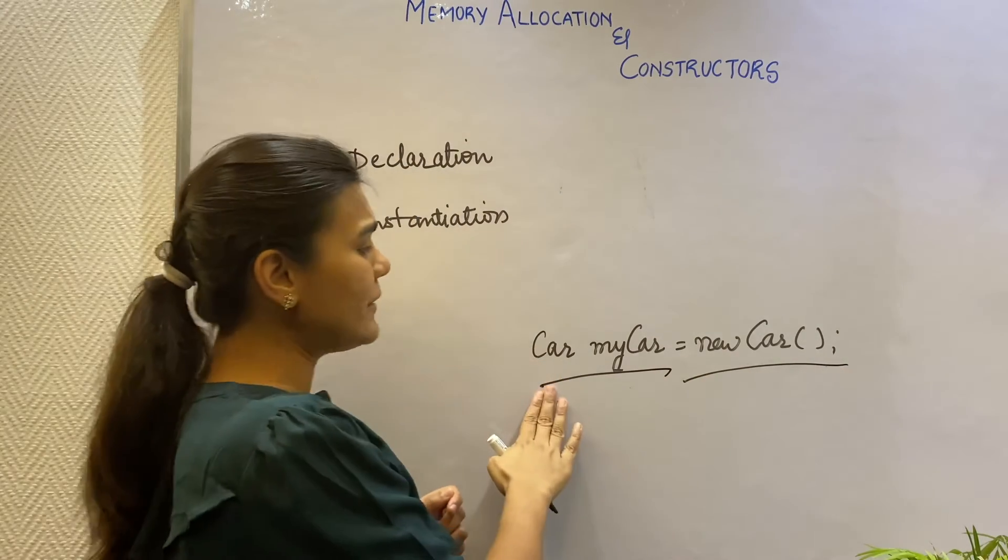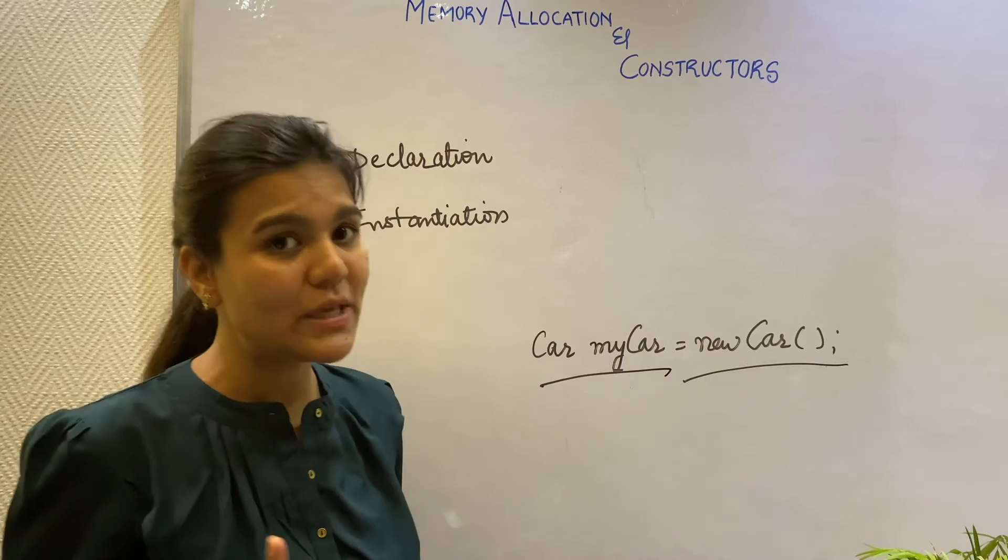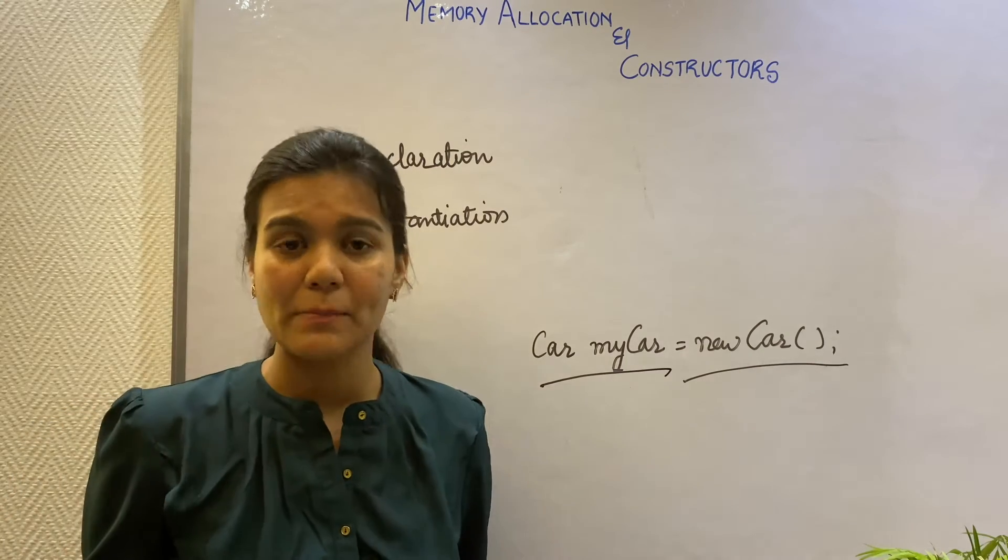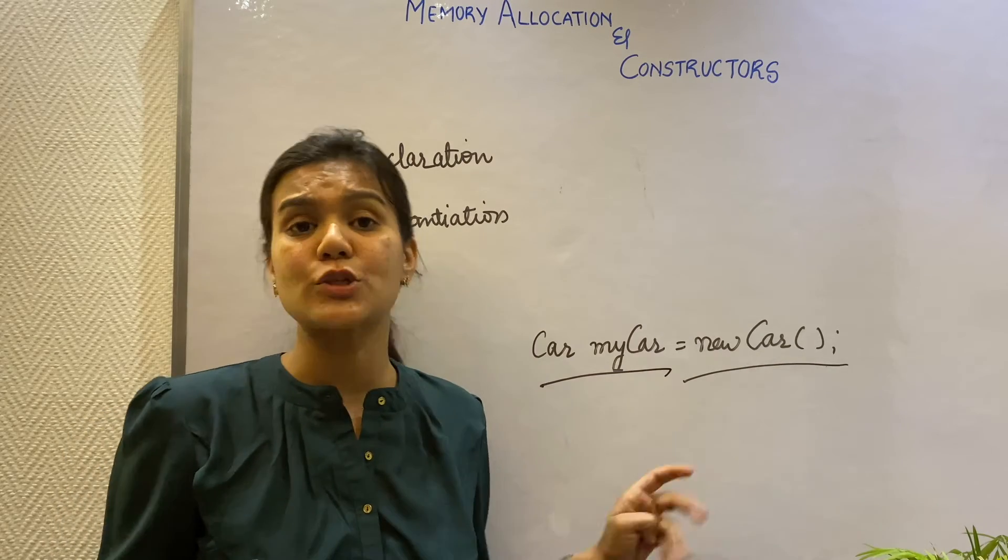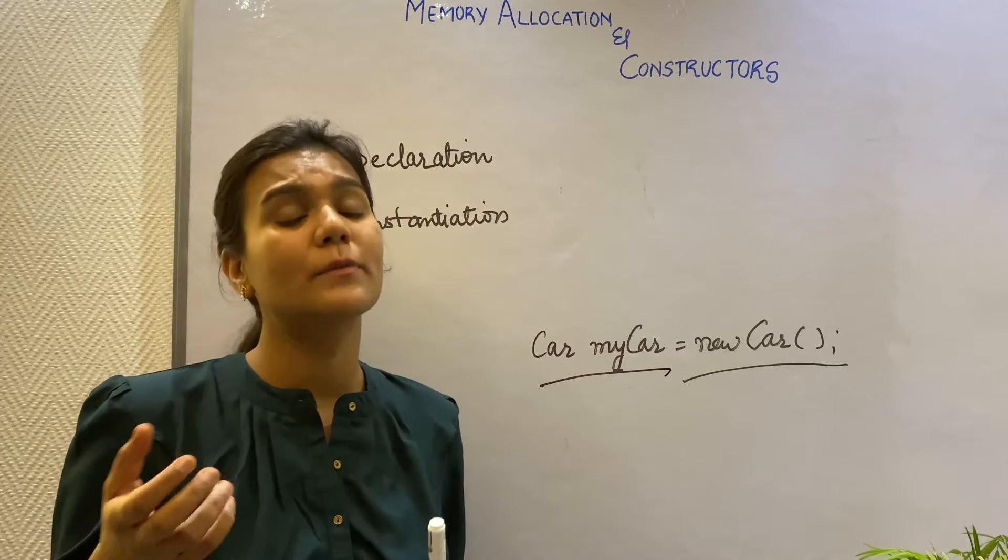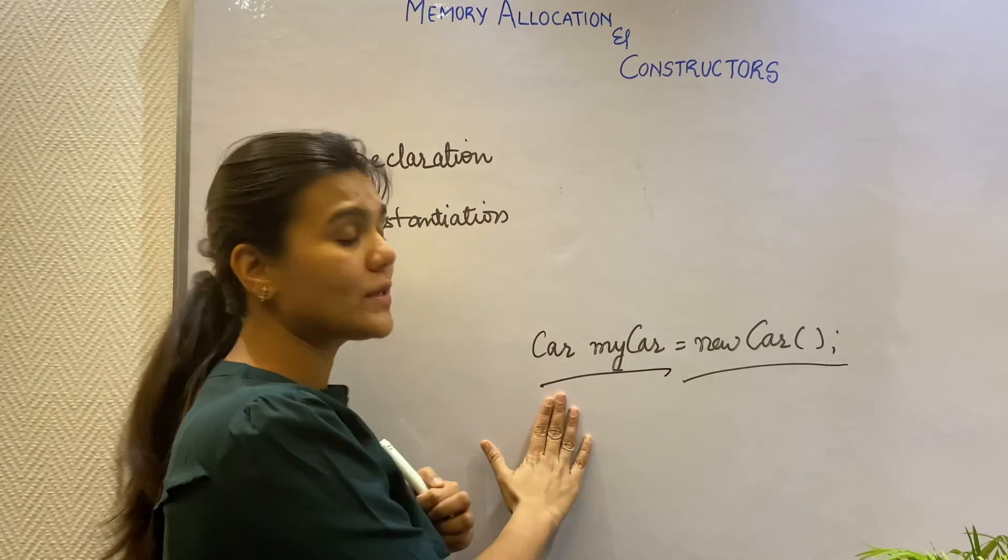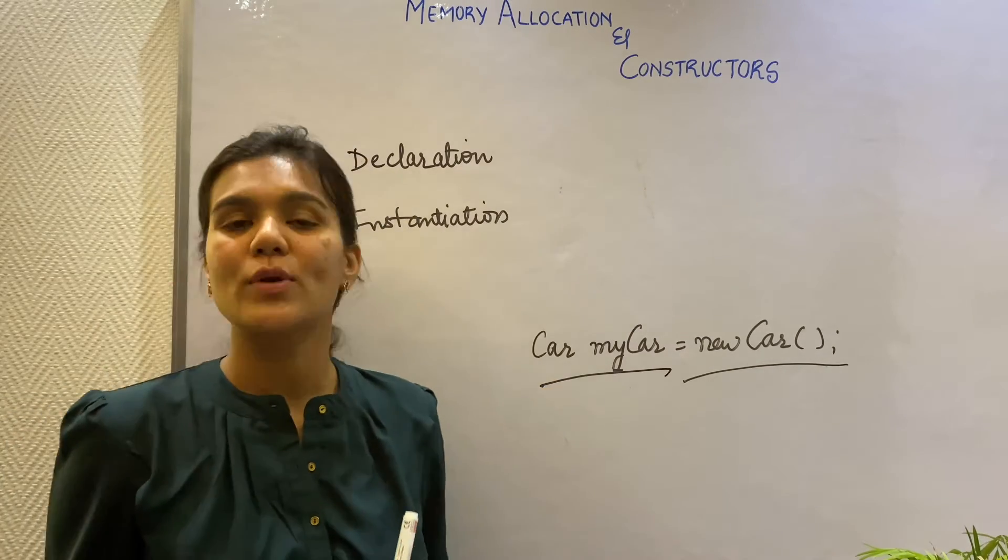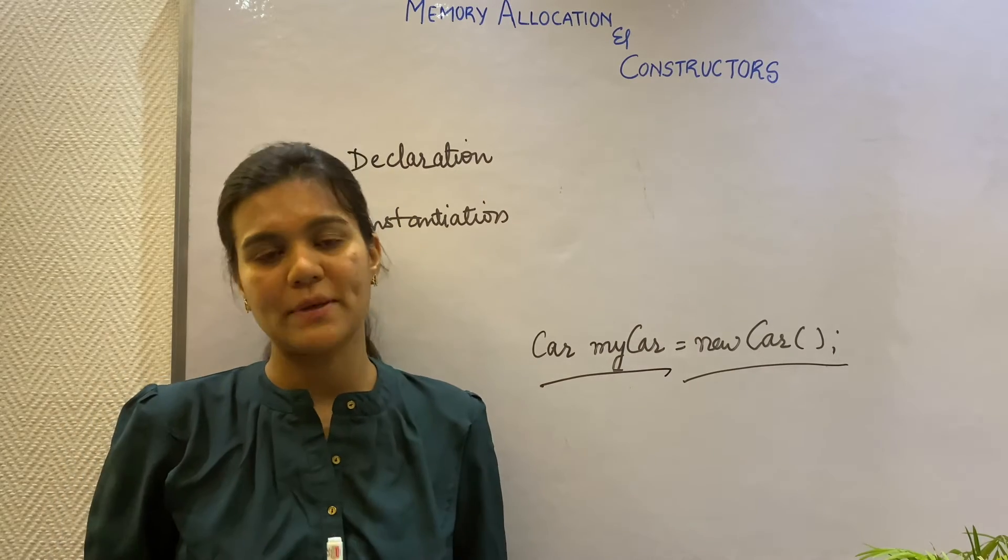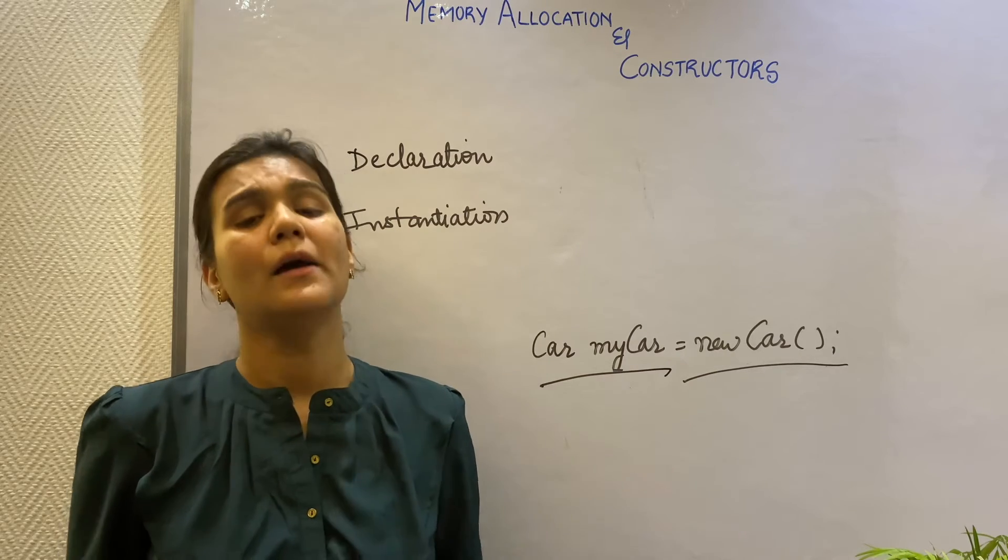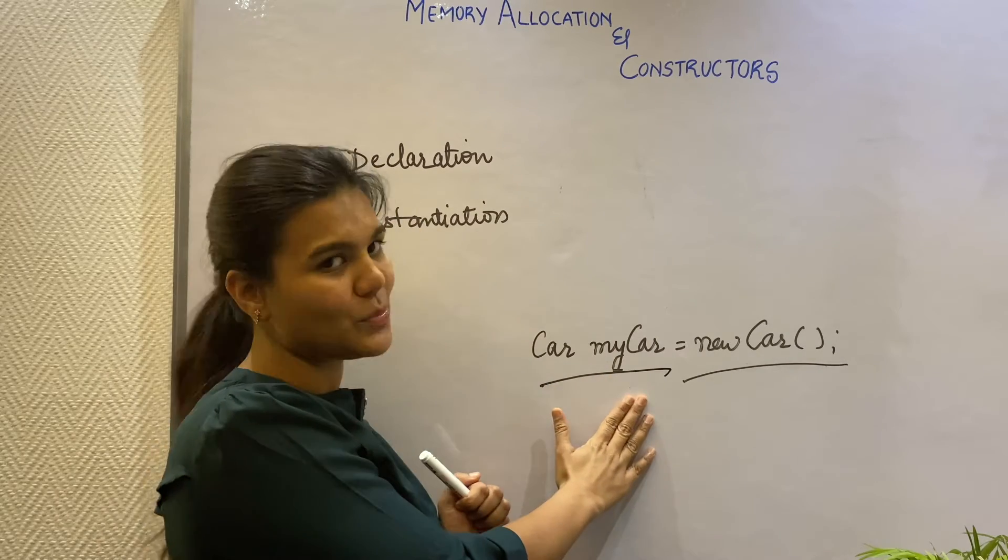You can see that in my declaration, I have declared a my car reference variable of the type car. I have used two keywords here, the reference variable and the type car. My car is called a reference variable because it does not hold the actual object, but just a reference or the address of the memory pointing to the actual object. And car is called a type because car is a class. And what is a class? A class is a logical framework that defines the relationship between its members. So class is nothing but a user-defined data type. And of course, I can use this data type to create my reference variable.